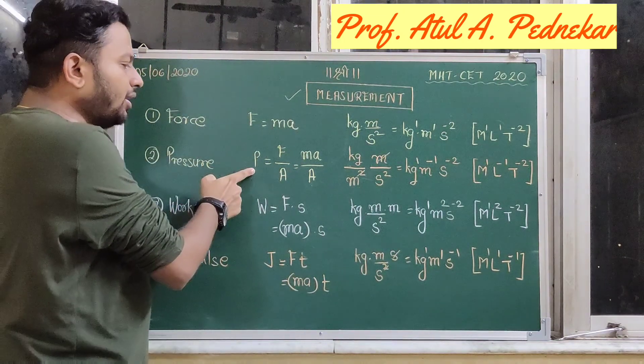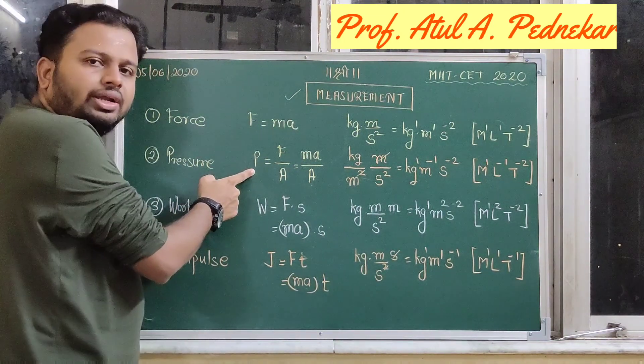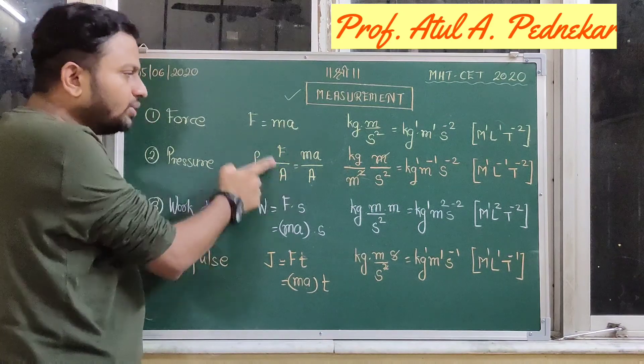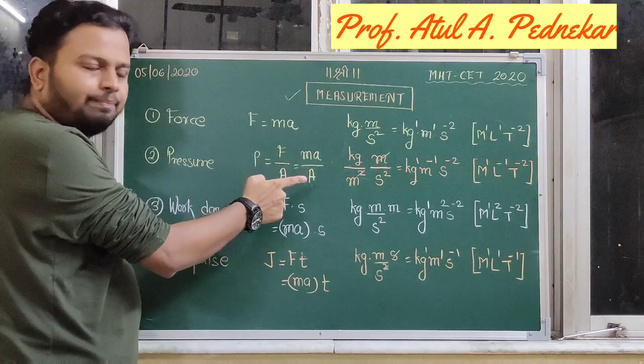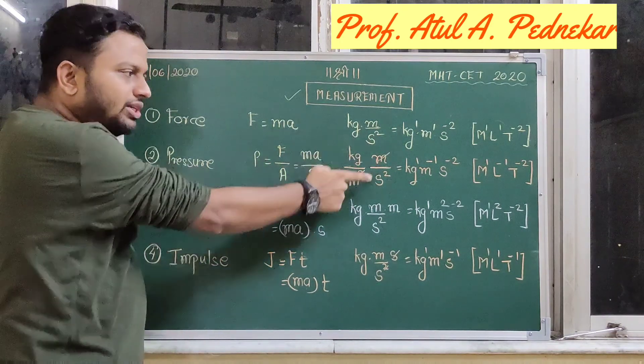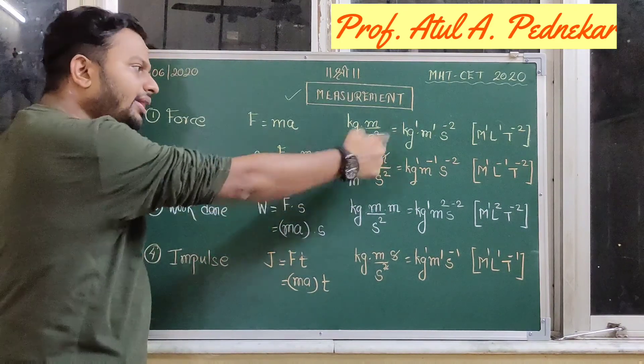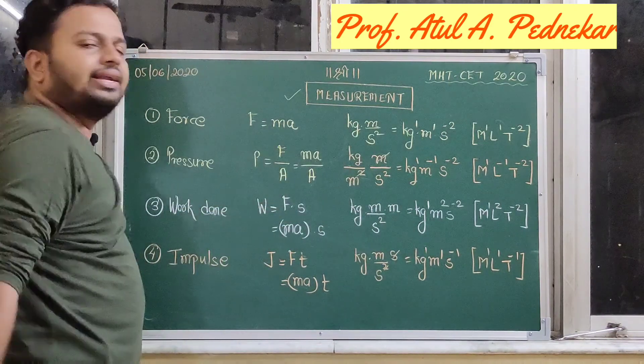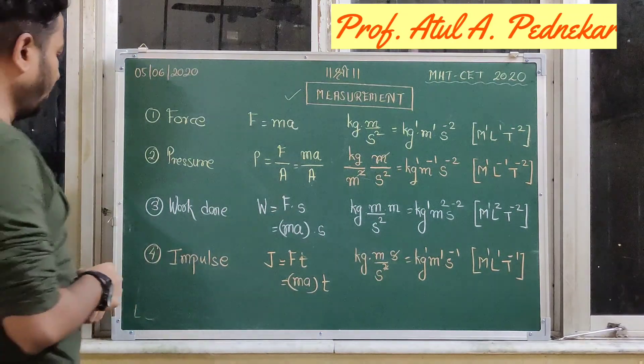So first we have to simplify the formula for that particular physical quantity, then simplify its units, and then you can directly write the dimensions for it.